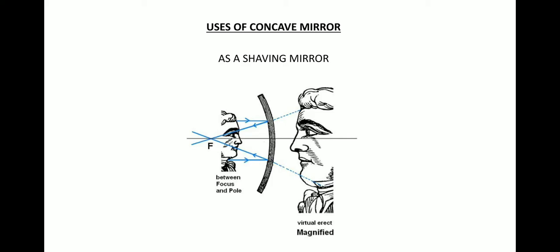Concave mirror is used as a shaving mirror. The face should be held near the mirror, that is between the pole and the focus of the mirror. Here, this is the pole and this is the focus. So the face should be in between the focus and the pole of the mirror and thus the image will be formed upright and the image will be magnified and it will be inside the mirror. That's why it will be a virtual image.